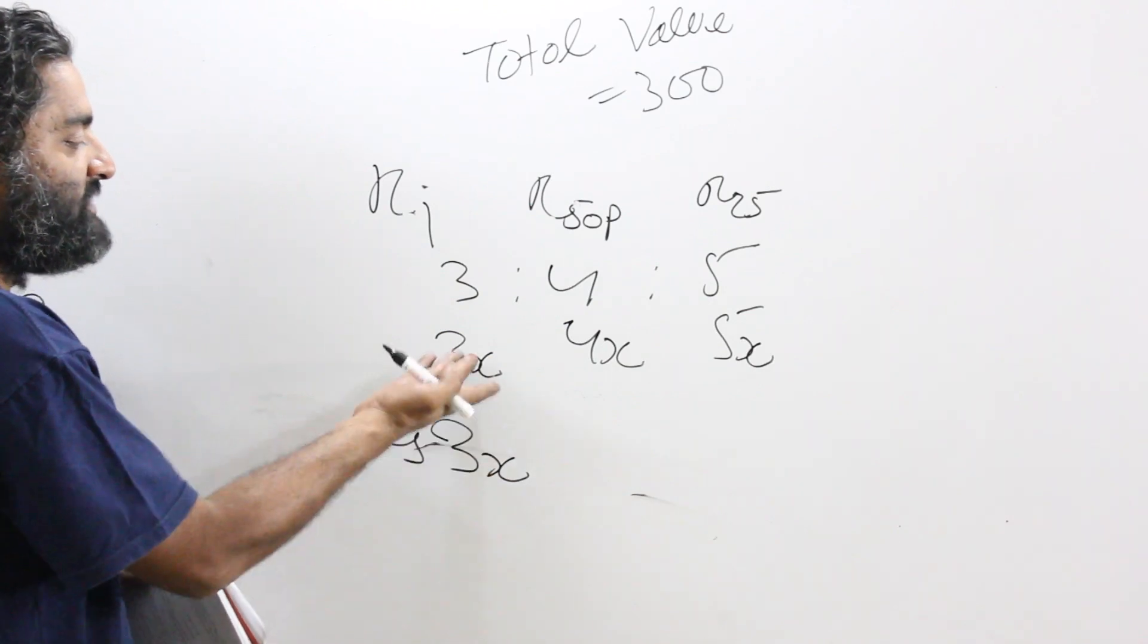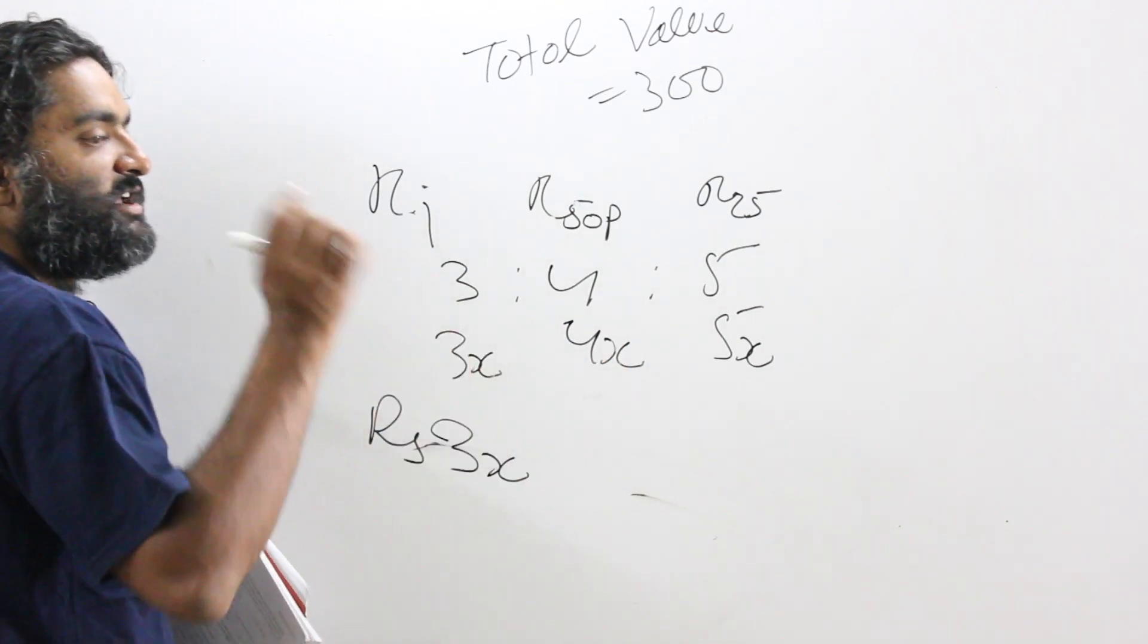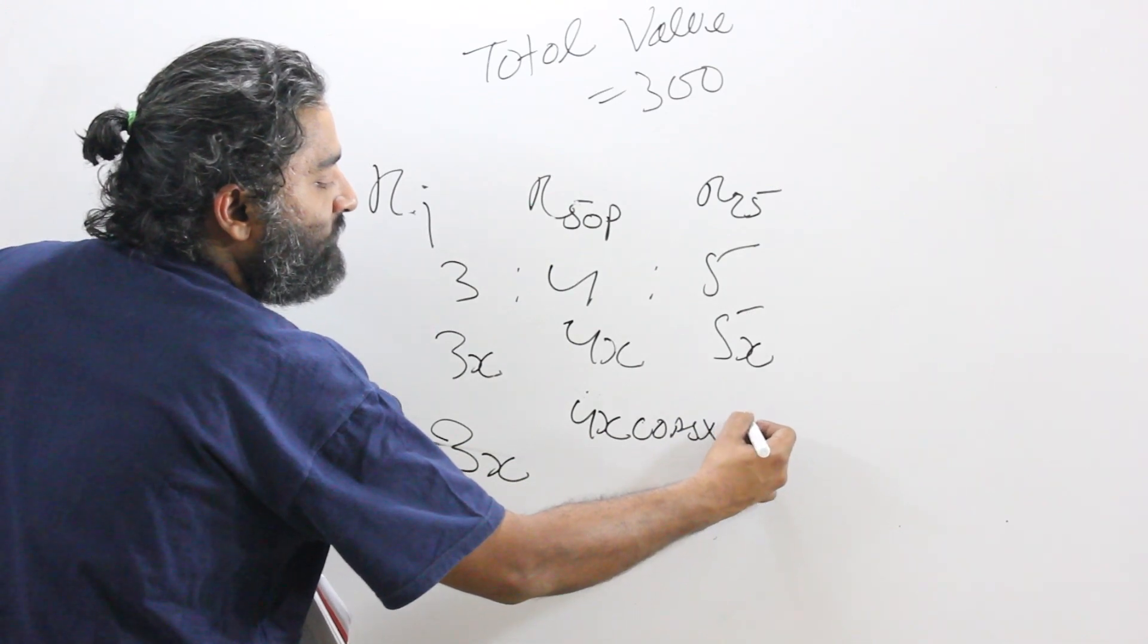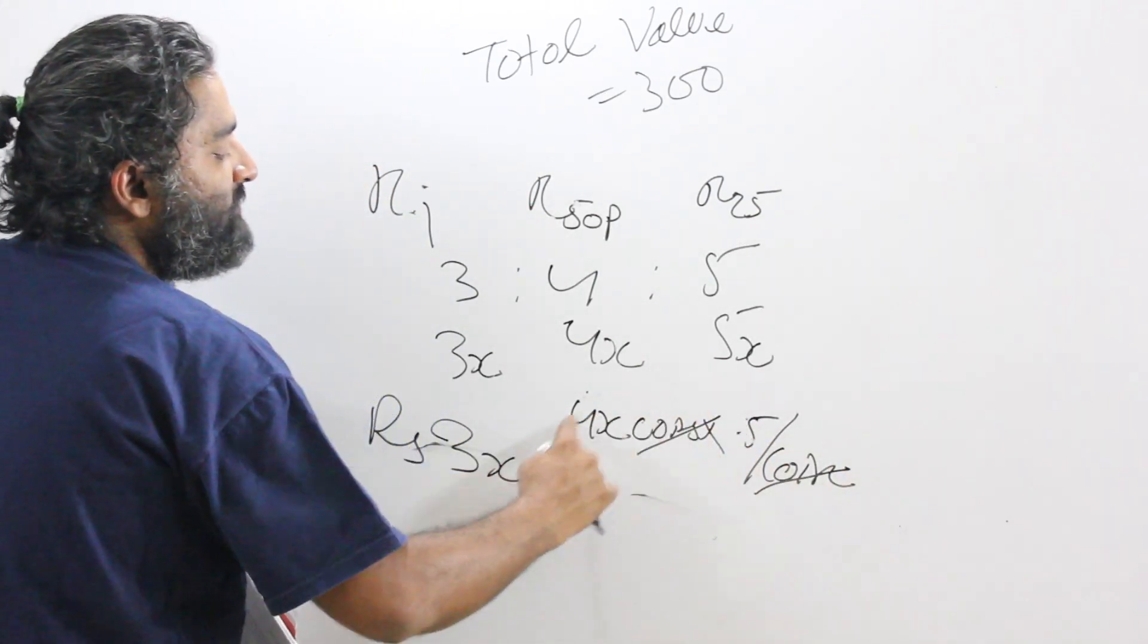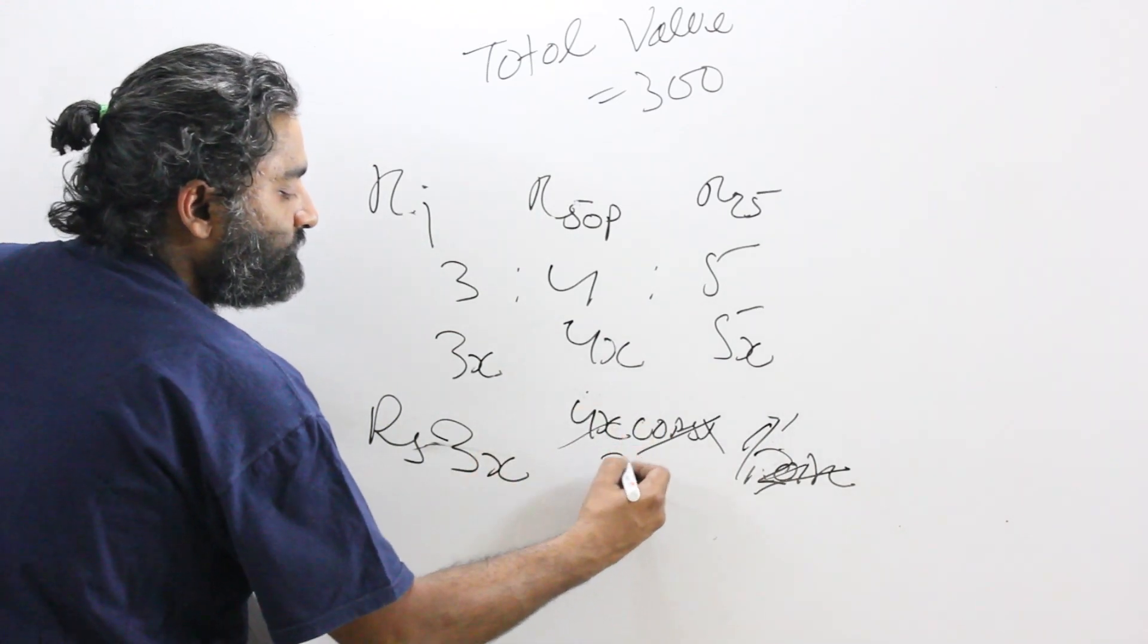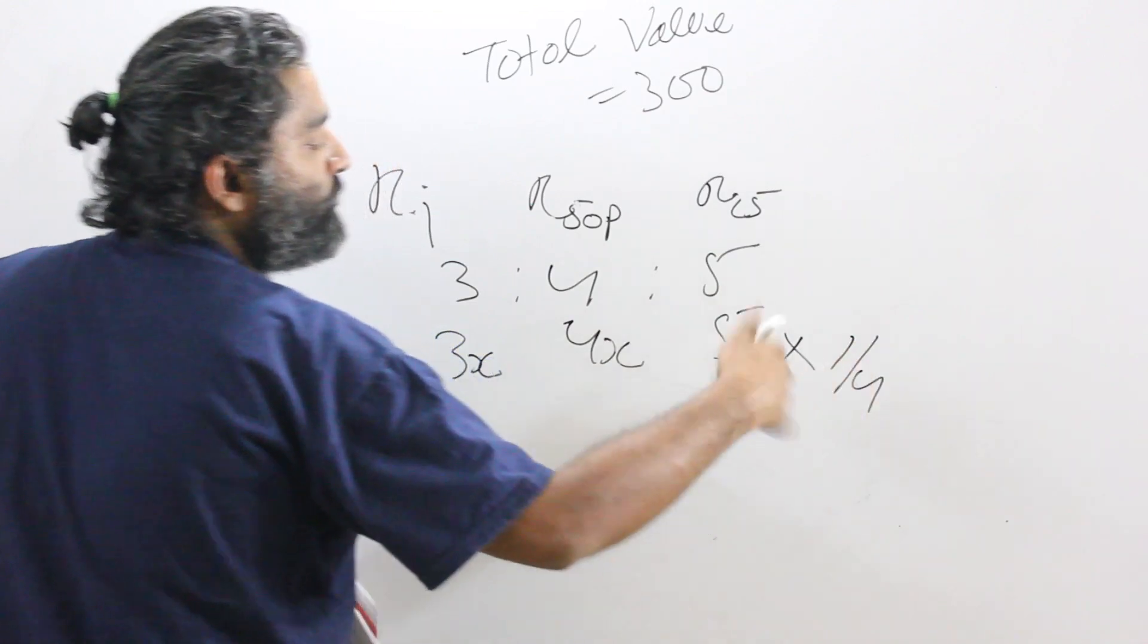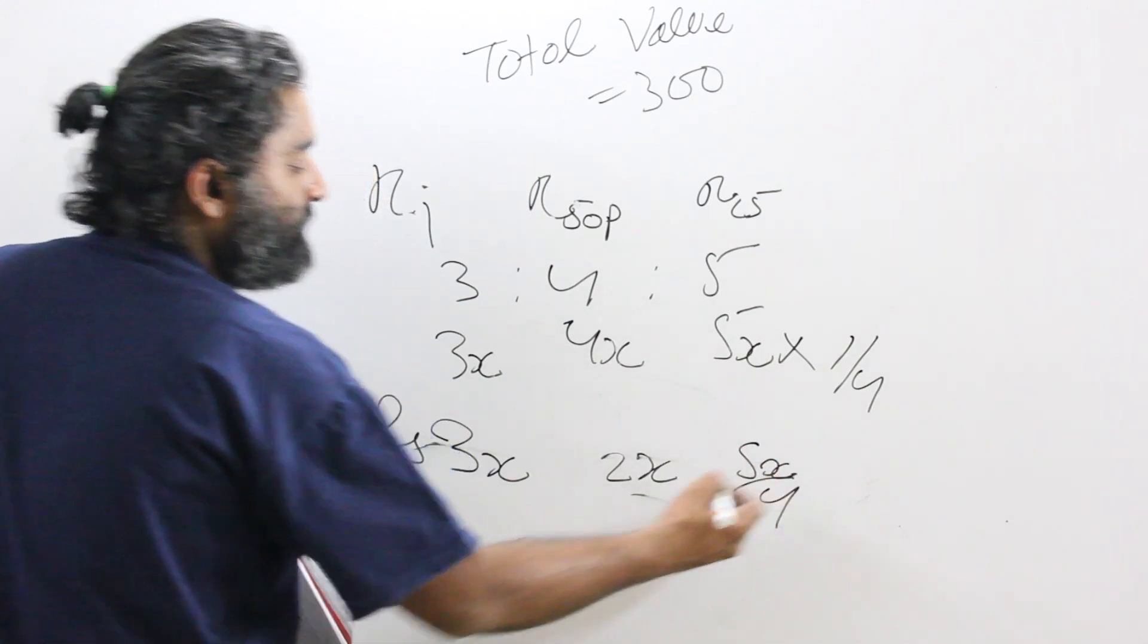It will make more sense here. The number of 50 paisa coins is 4x and what is the value of the 50 paisa coin? It is 50 paisa per coin or half a rupee per coin. You have 4x coins and you are multiplying it to the rate which is 0.5 per coin. Coin coin gets cancelled, 4x into 0.5, you get 2x. Same process here, 5x into what is the value? 1 by 4 rupee per coin. The coin coin gets cancelled, 5x into 1 by 4 you get 5x by 4.